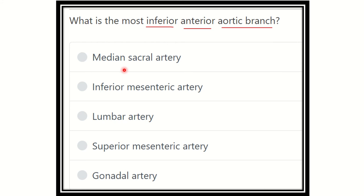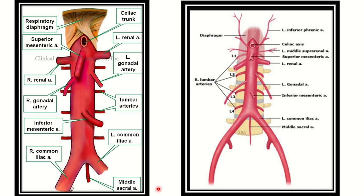The options are: median sacral artery, inferior mesenteric artery, lumbar artery, superior mesenteric artery, and gonadal artery. We have to find out which branch is located anteriorly — that is, which is the anterior aortic branch — but is the most inferiorly placed.